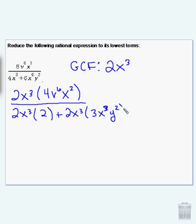Sorry, x to the third, y squared. Canceling out my 2x to the thirds. That leaves me with 4v to the sixth, x squared, over 2 plus 3x to the third, y squared.